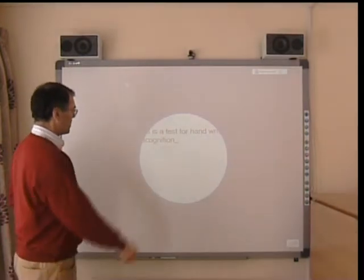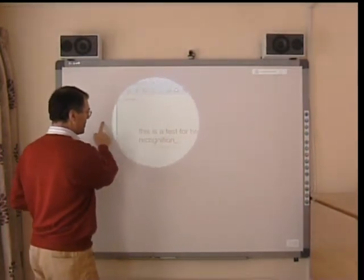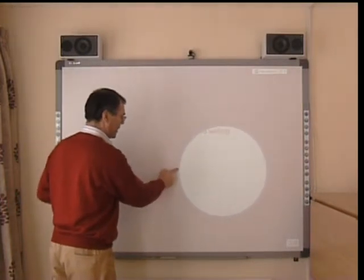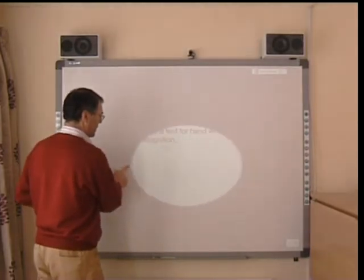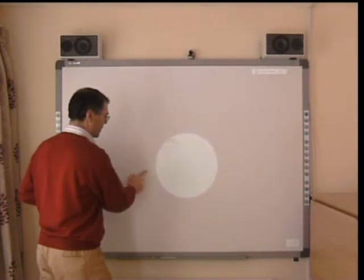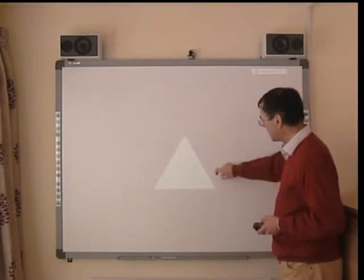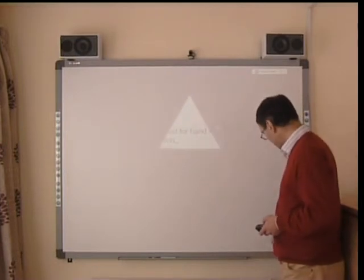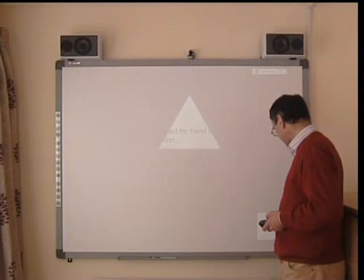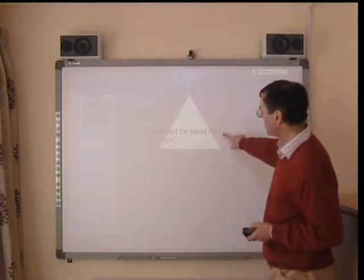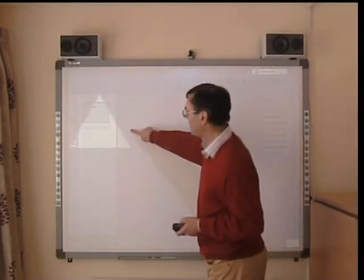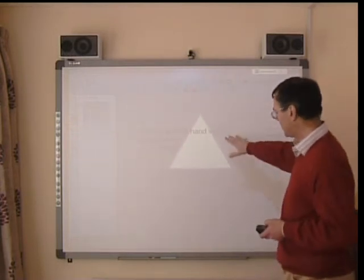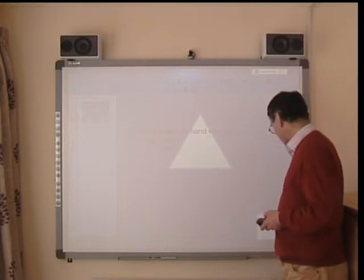The next tool we look at is the spotlight. What the spotlight will do is highlight any particular area, and this spotlight can be changed to a particular size that might suit. You can also change the shape of the spotlight — so if you want a triangle instead, you can have a triangular shape or any one of a variety of shapes. We can also have a transparency where the background can be seen.